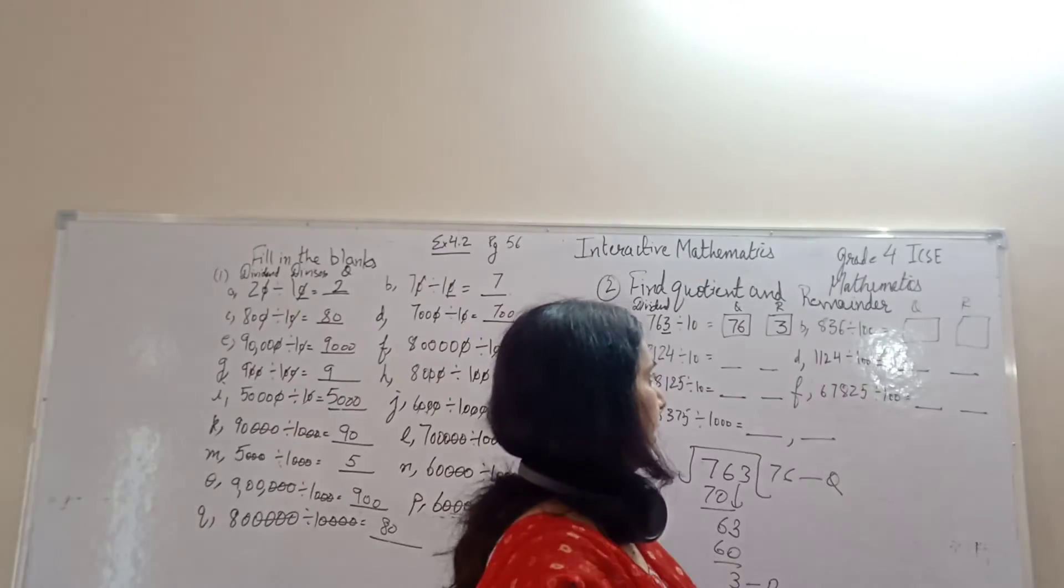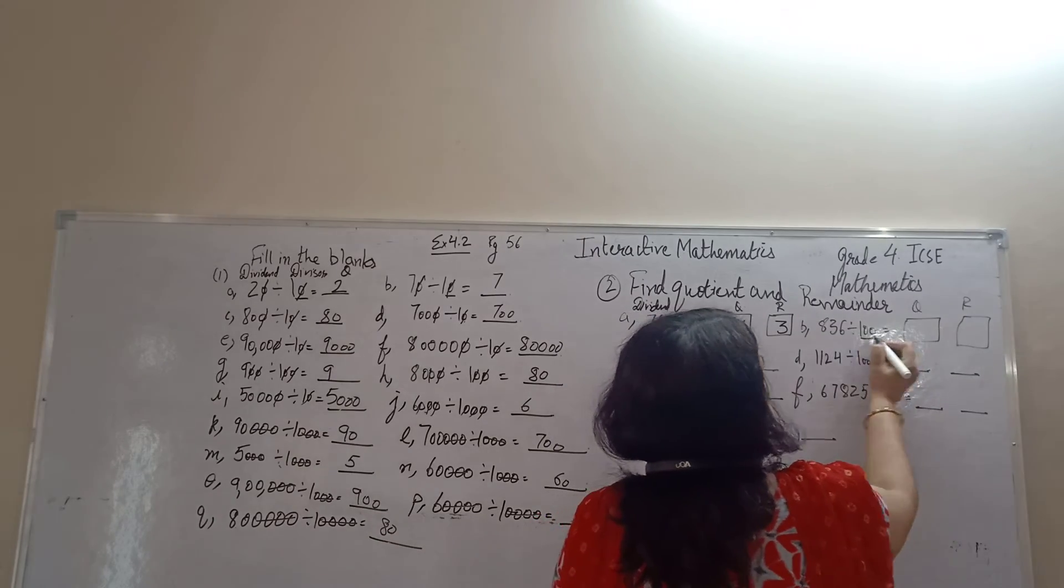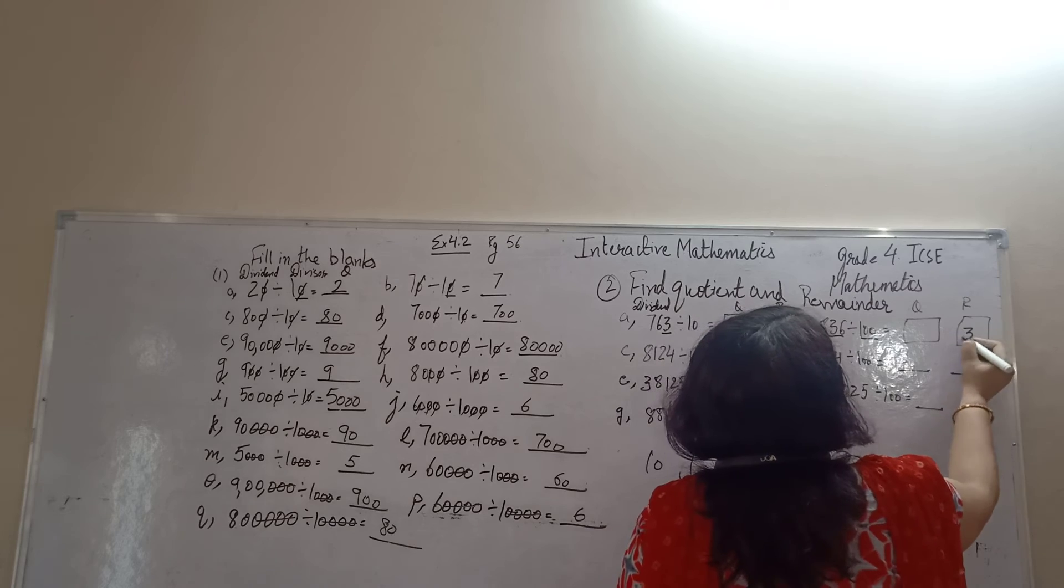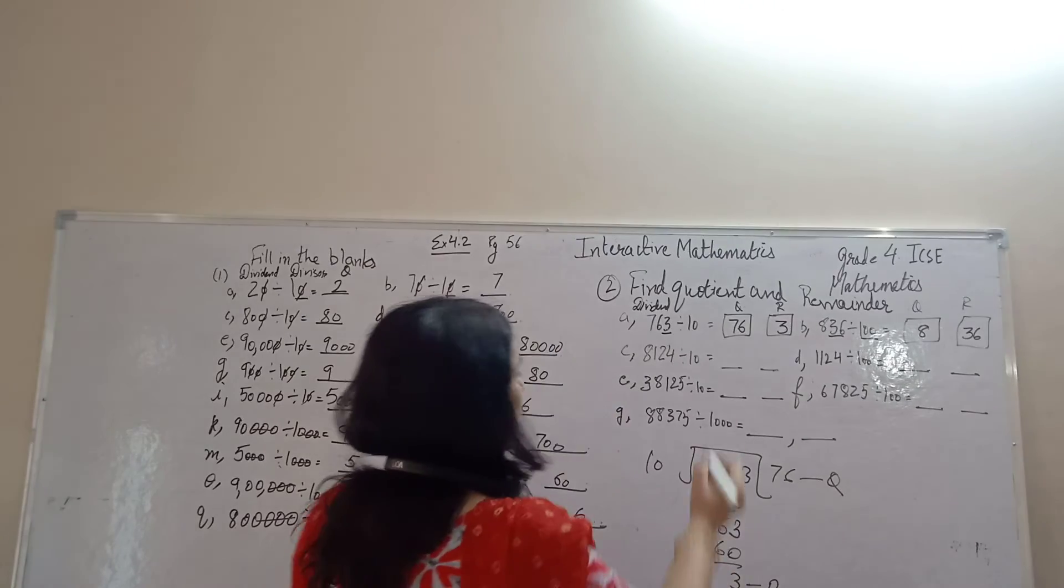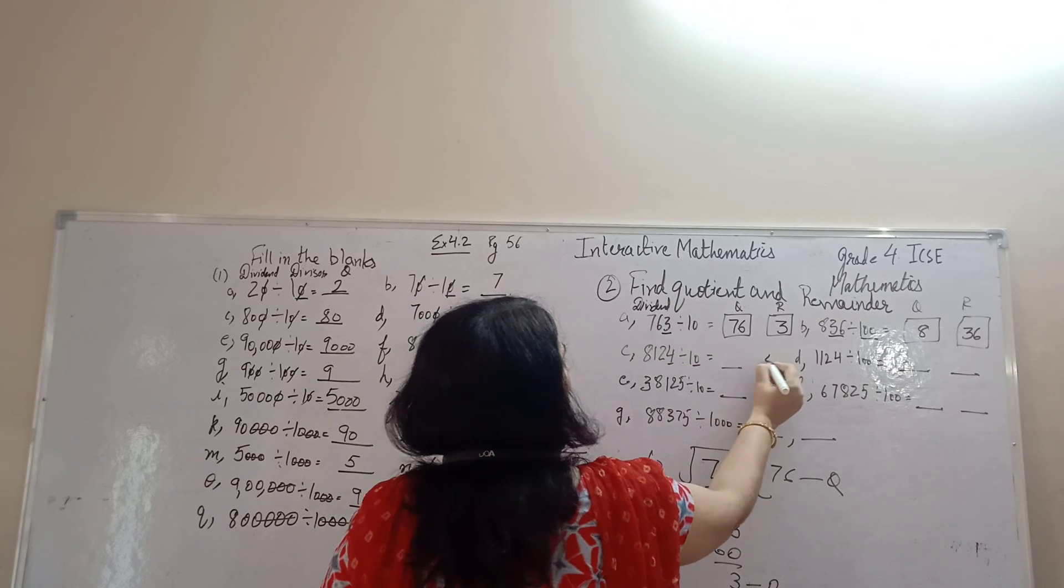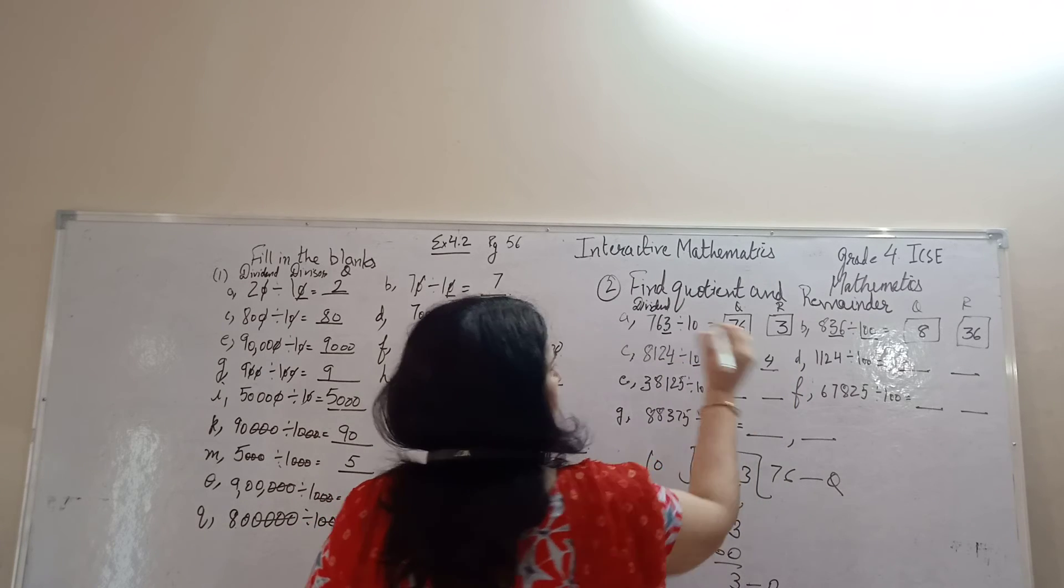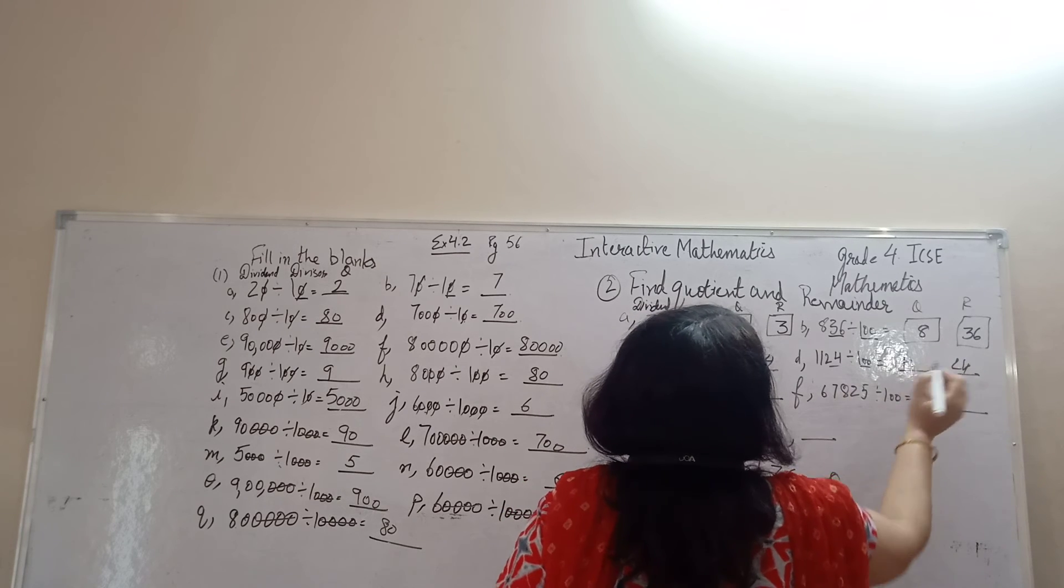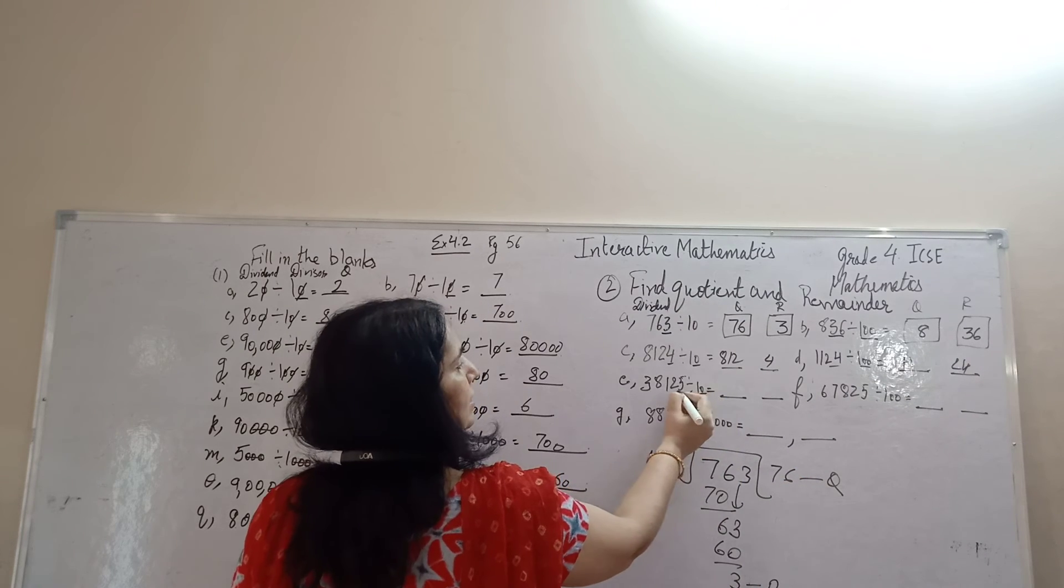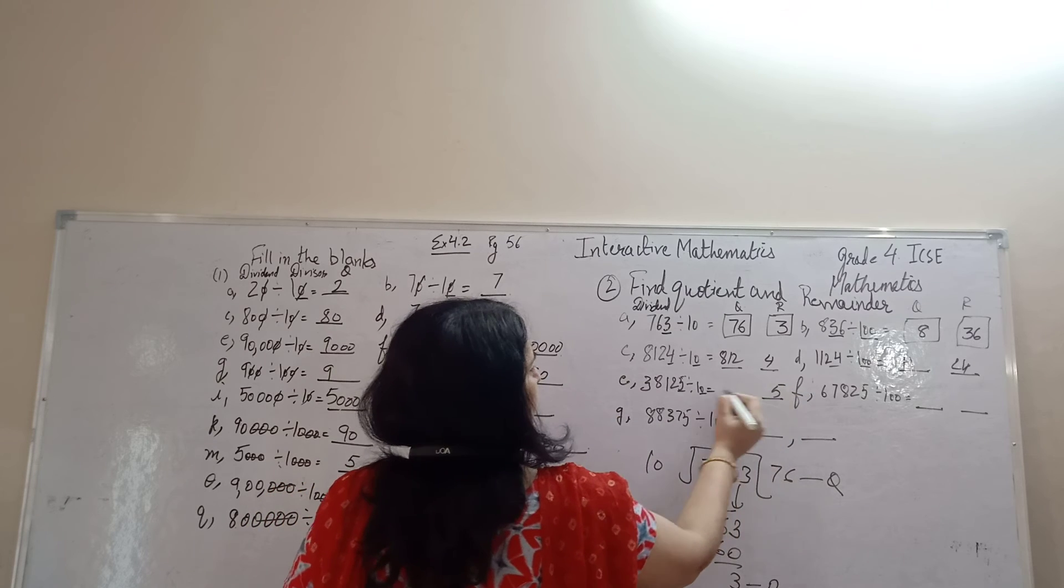836 divided by 100. 2 zeros, 2 digits starting from ones place will be remainder. Rest is quotient. 1 zero, 4 is remainder. Rest is quotient. 2 zeros, 24 is remainder. 11 is quotient. 1 zero, 5 is remainder. 3812 is quotient.